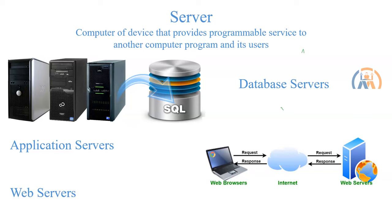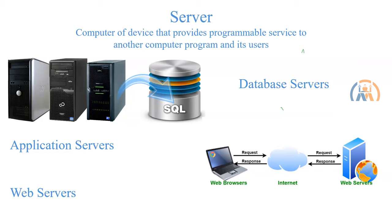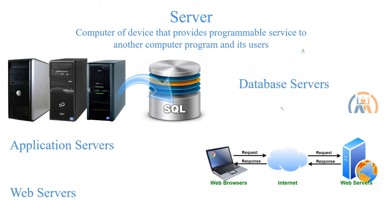Application servers are services that the cloud provider shares with you — with these services you can run your applications. For example, we have Elastic Beanstalk in AWS where you can run your applications. We also have web servers like Apache Tomcat, with which you can host your website.